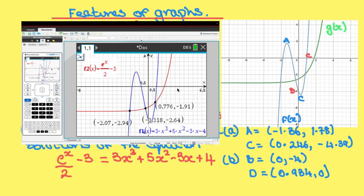Let's get them out of the way so we have one, two, three intersection points. So our intersection points are -2.07. We only want the solutions so we only want the x values. So the first one is -2.07, the second one is -0.318, and the last one is 0.776.